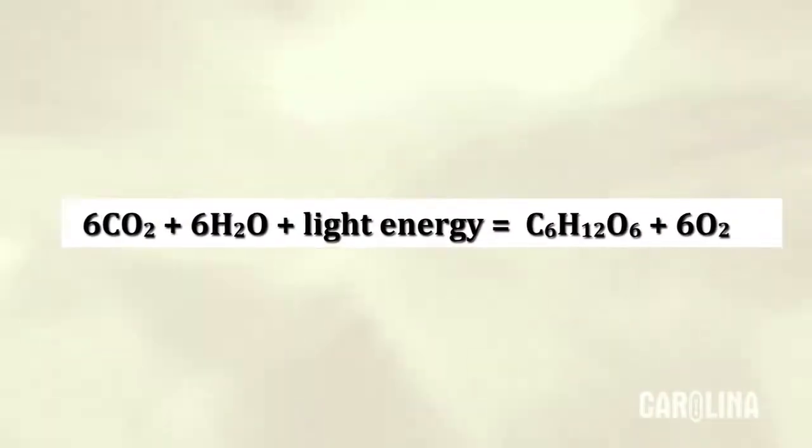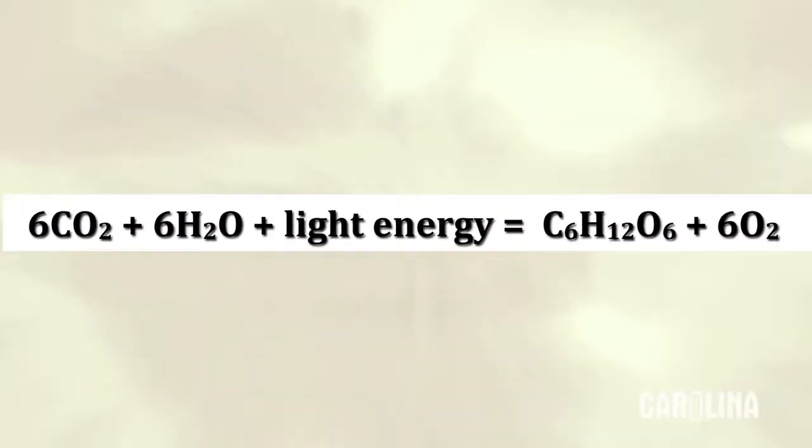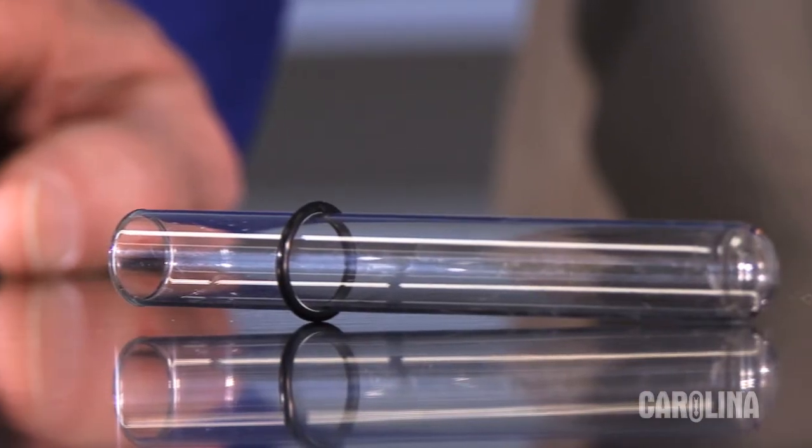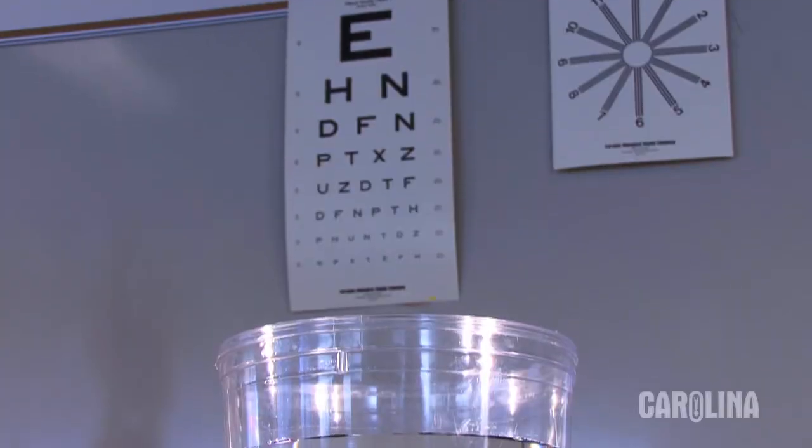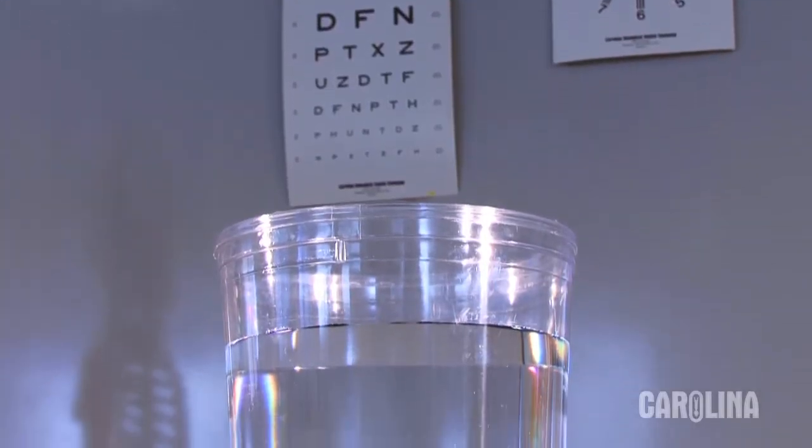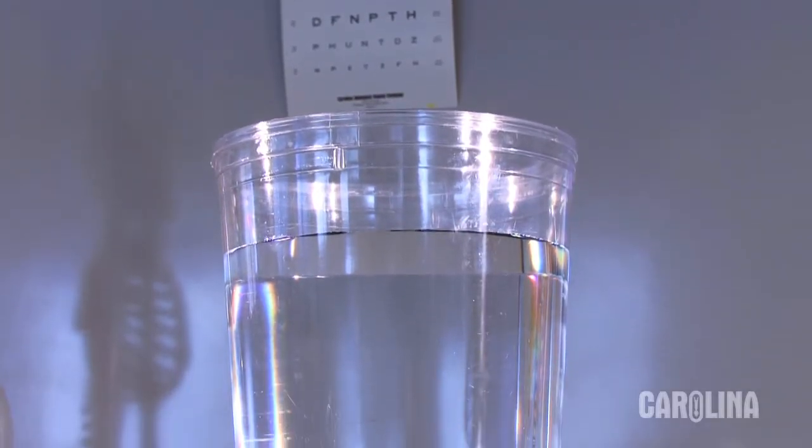Oxygen is a byproduct of photosynthesis. You can collect oxygen from photosynthesis in a test tube. Here's how. In this container, I have room temperature dechlorinated water.